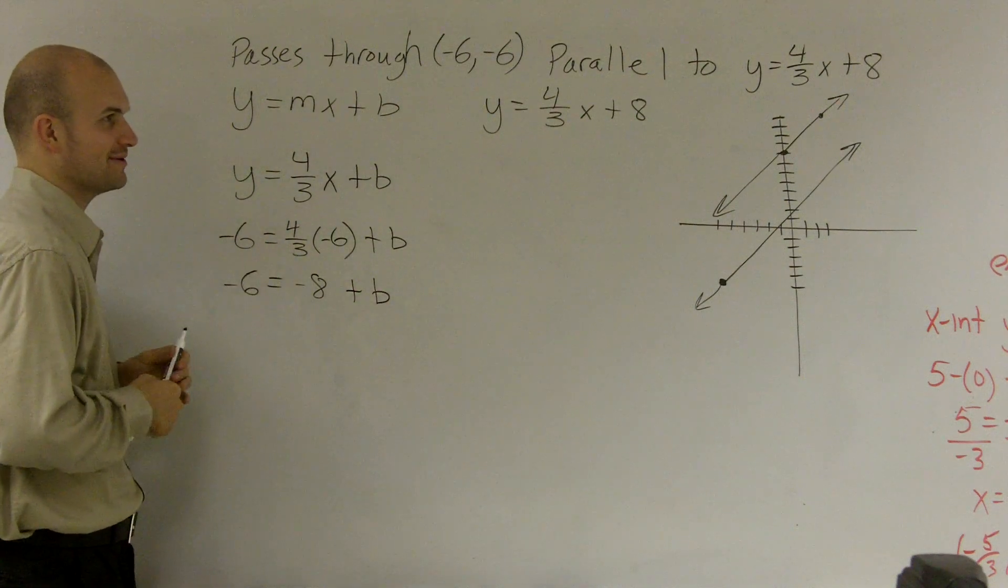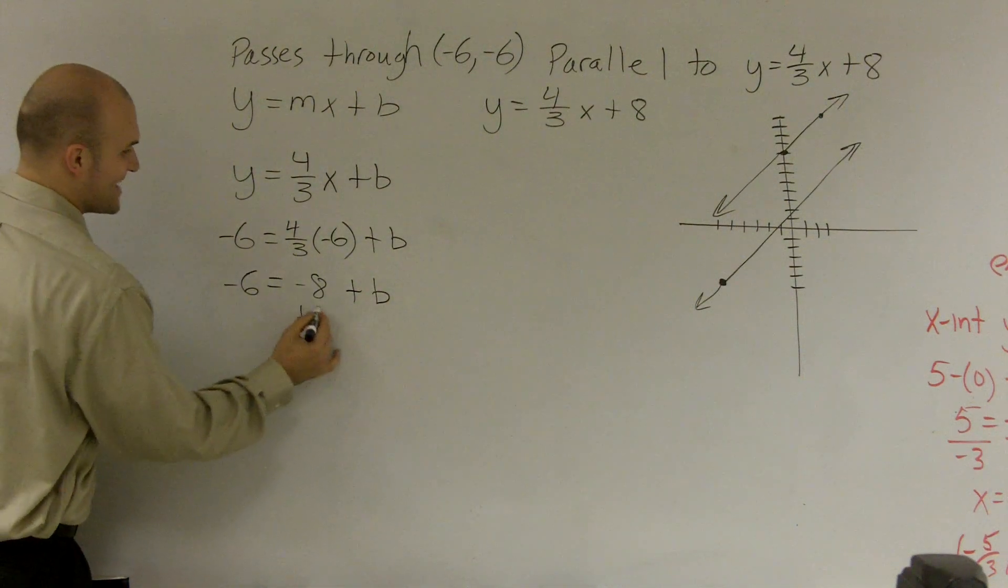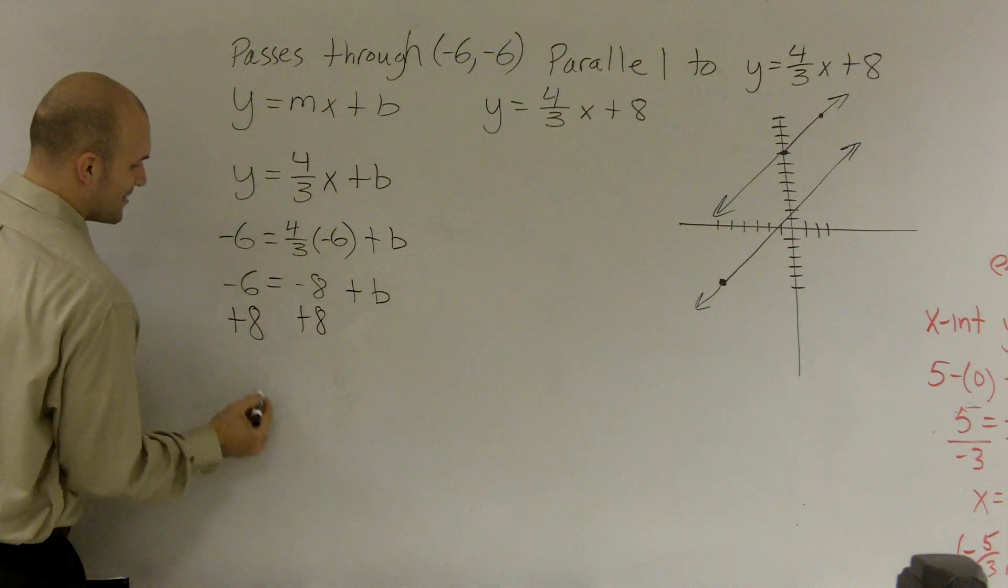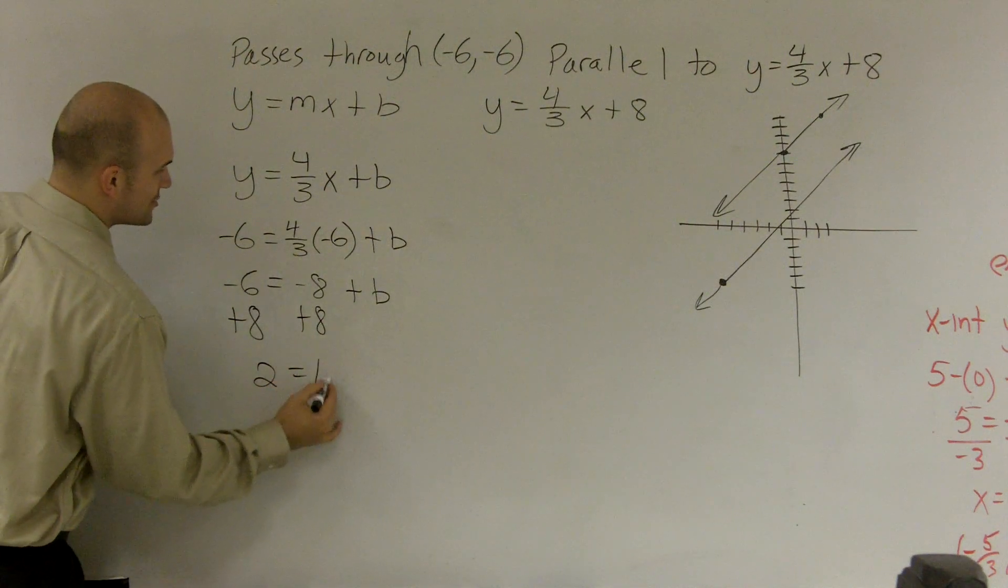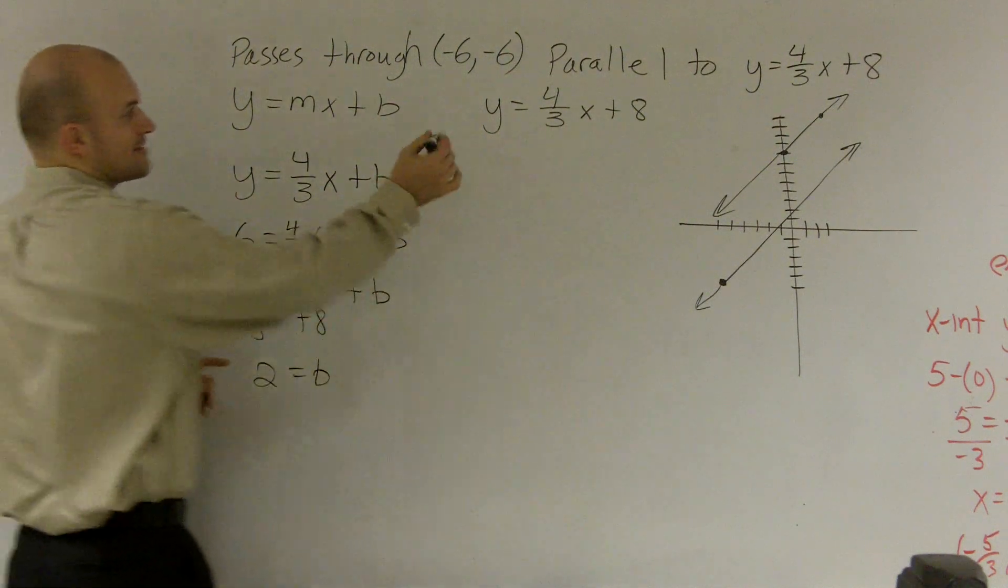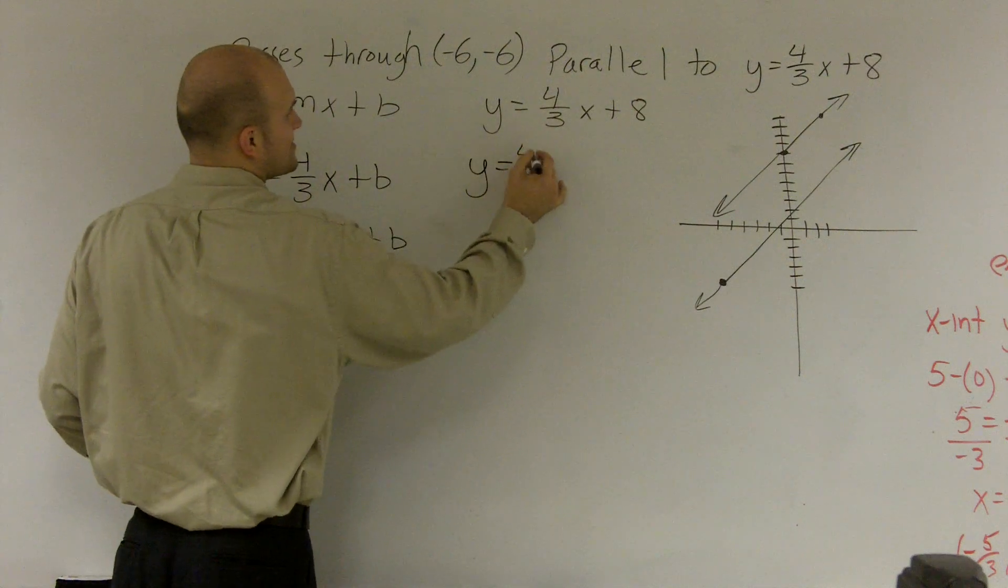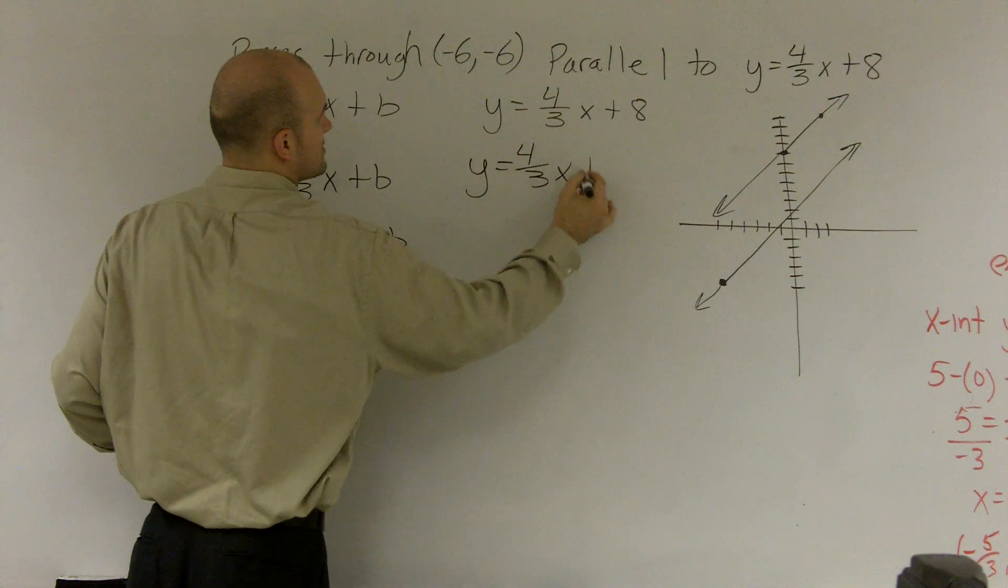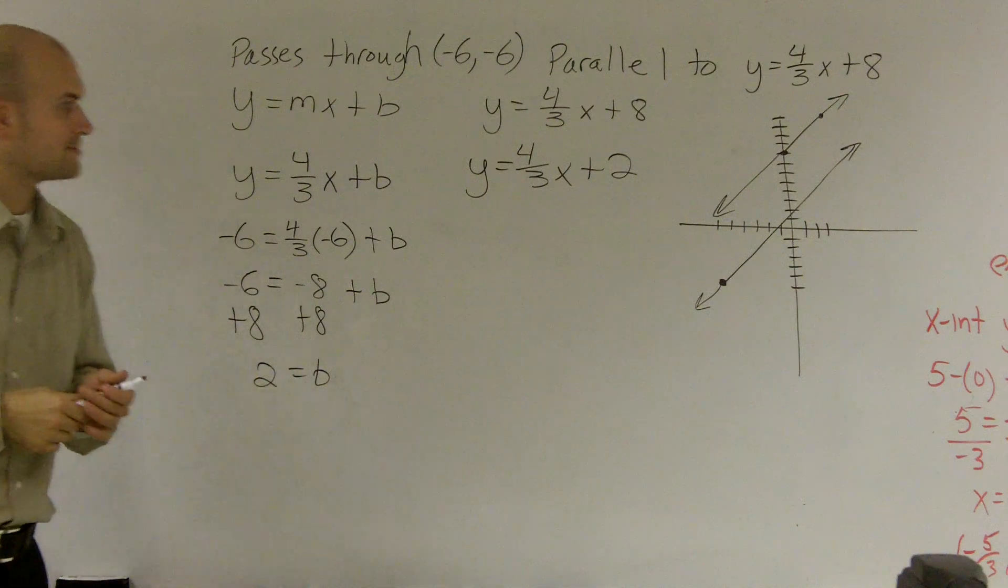Yeah, I'm just making one. Just one second. So all you got to do now is add 8, and what I have is 2 = b. So I write that as my y-intercept. I keep the same slope, 4/3x + 2 as my new equation.